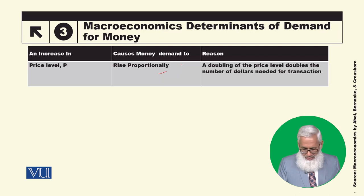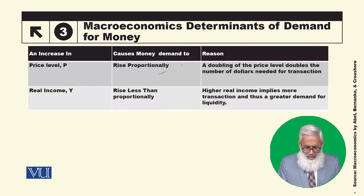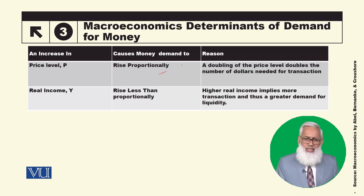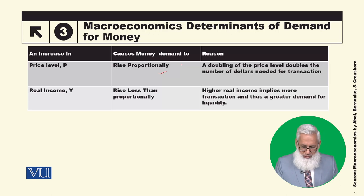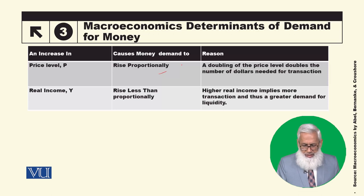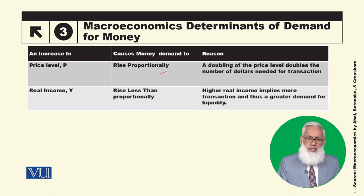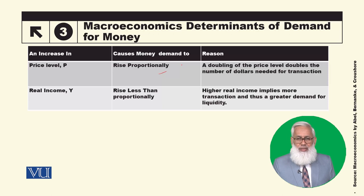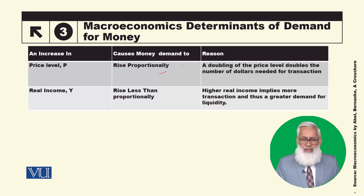Income का relationship — real income जब बढ़ती है, तो लोगों को ज्यादा खर्च करना है, ज्यादा transactions करनी हैं, तो they will need more money। Rise in real income से money demand बढ़ेगी, लेकिन price level की तरह proportional नहीं है — जिस ratio से income बढ़ती है, money demand उससे कम बढ़ती है।